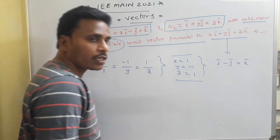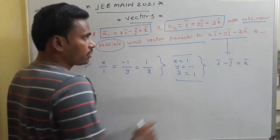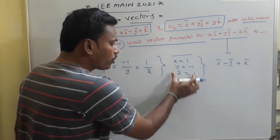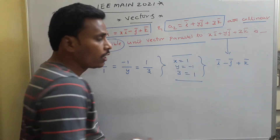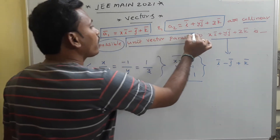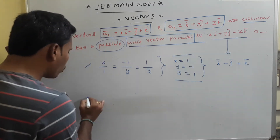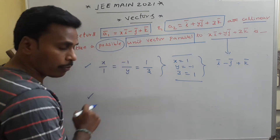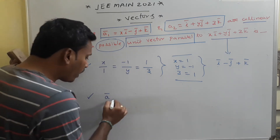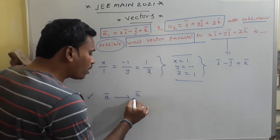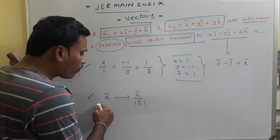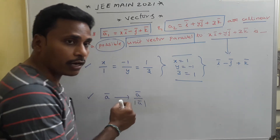One possibility satisfying the collinearity condition is x = 1, y = −1, z = 1, so the given vector becomes i − j + k. Now for the unit vector parallel to a given vector: if you have a vector a, then the unit vector parallel to a is simply a divided by the modulus of a. That is always the formula: unit vector = a / |a|.